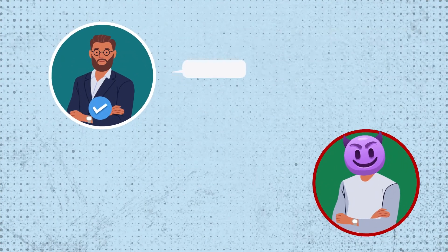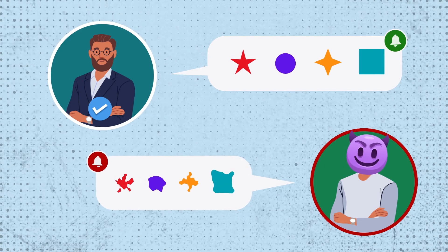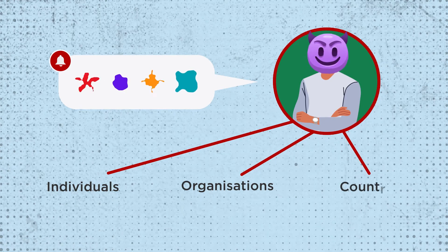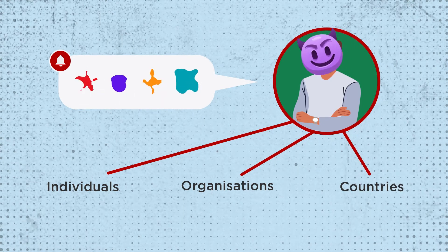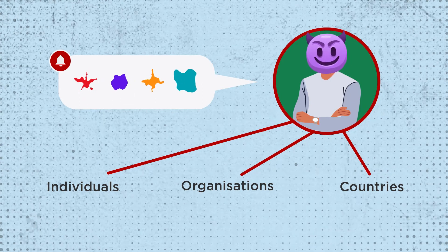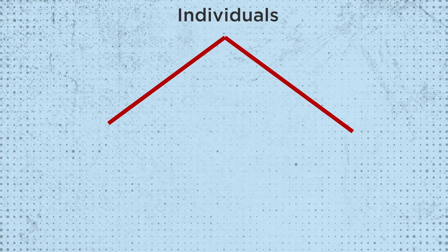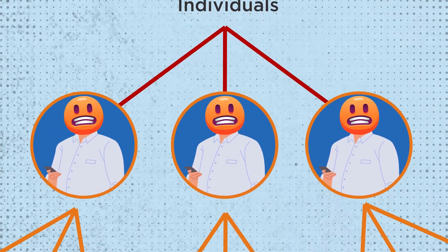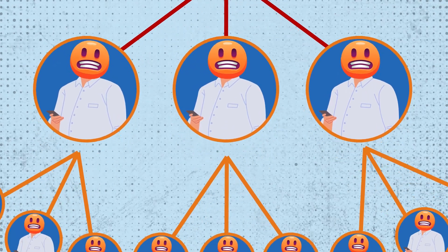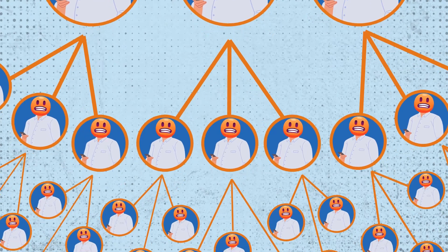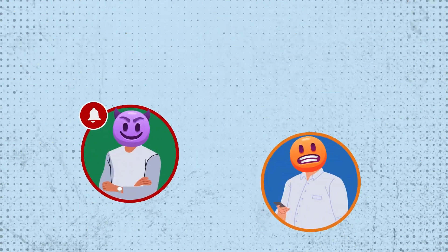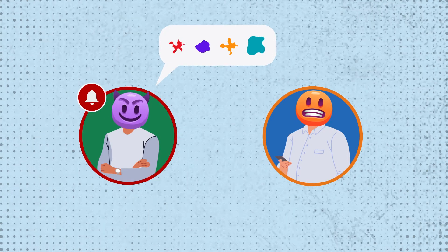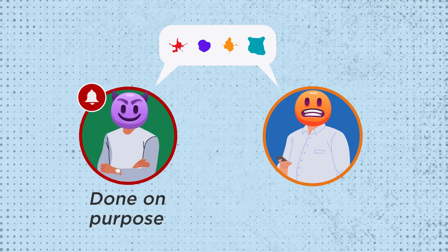Disinformation is used to describe intentionally false information designed to cause harm. This could be towards individuals, organizations, or even countries. Crucially, those who spread disinformation know that what they're sharing is false. But when disinformation goes viral, it can very quickly turn into misinformation. Misinformation describes false information spread by someone who believes in what they're sharing and thinks they're acting in good faith by helping others. Hence, the distinction between disinformation and misinformation mostly lies within intent — one is done on purpose, whereas the other is often accidental.